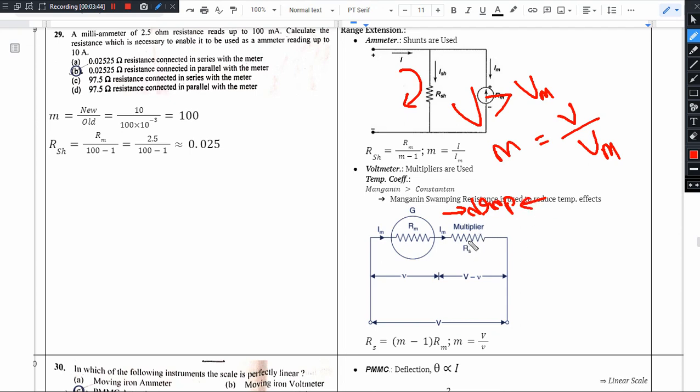We need voltage drop, so we need series connection and resistance value should be high. R series, the multiplier, should be greater than Rm. So R_se equals Rm multiplied with m minus 1. In both shunt and multiplier cases we have m minus 1 factor - shunt divides, multiplier multiplies.